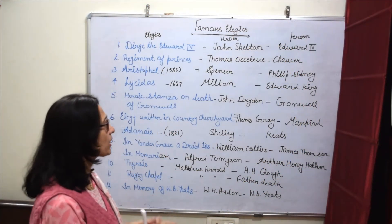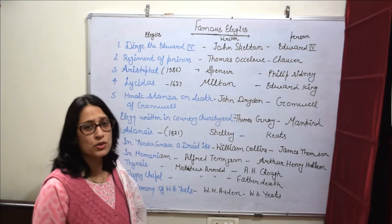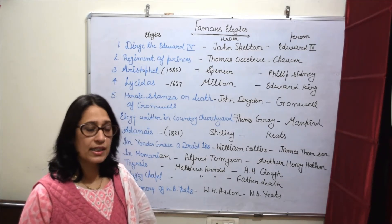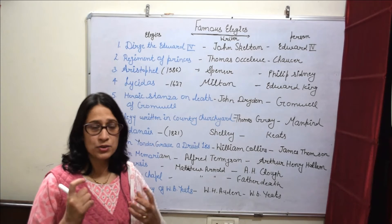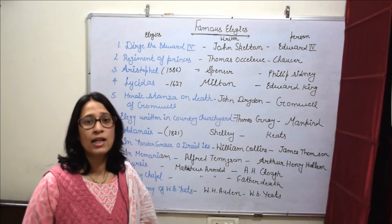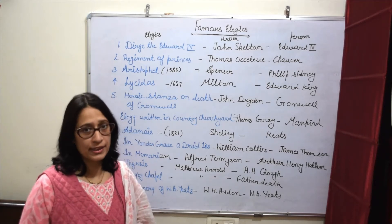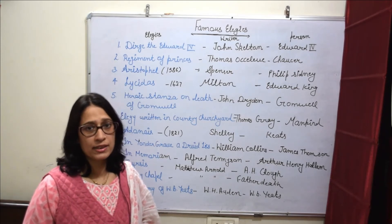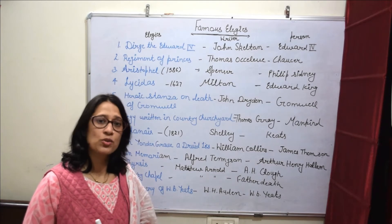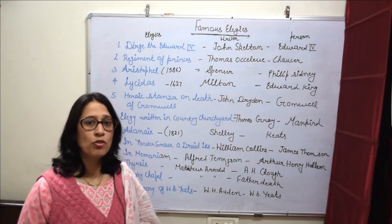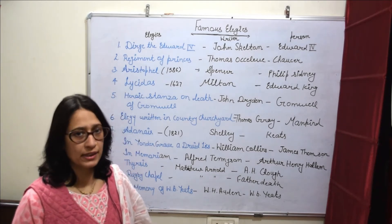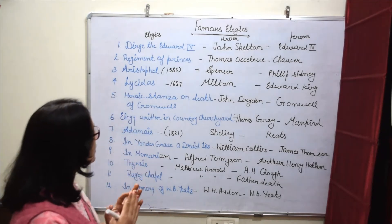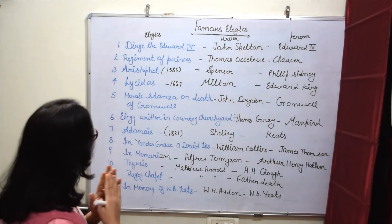First of all, we need to know what is an elegy. An elegy is written on someone's death, which we call an elegy. It is a pastoral elegy in which the setting is rural. So let's discuss the famous elegies of English literature.